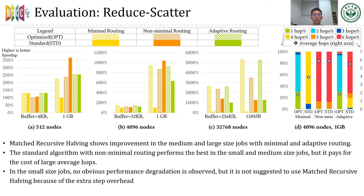Here is the result of reduce-scatter. Our optimization shows improvement in medium and large-sized jobs with minimal and adaptive routing. The larger the data, the greater the speedup. Similarly, in small and medium-sized jobs, standard algorithms with non-minimal routing perform best, paying the cost of large average hops. In large-sized jobs, optimized algorithms perform best with all routing methods. The speedup for reduce-scatter is the largest among all the operations, confirming the serious topology mismatch problem in reduce-scatter operation.